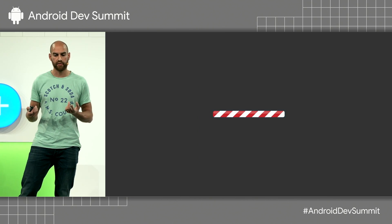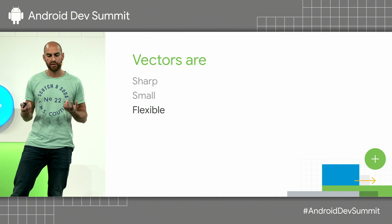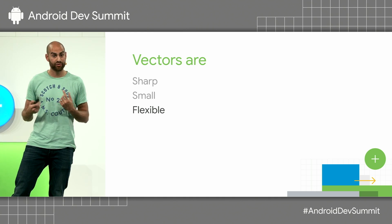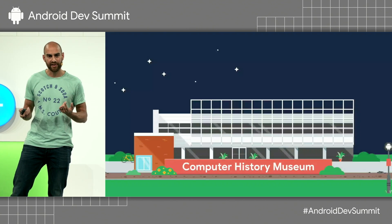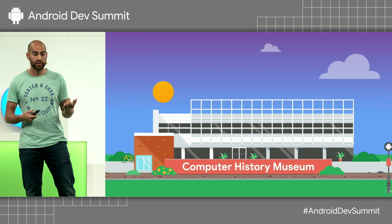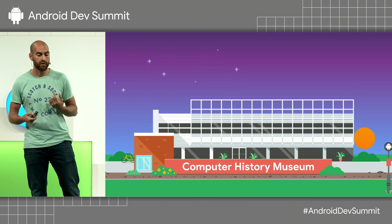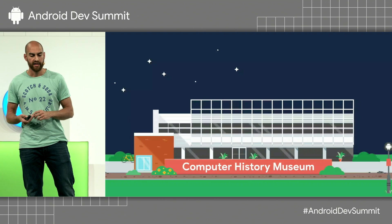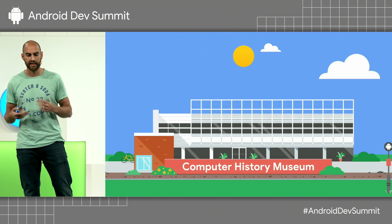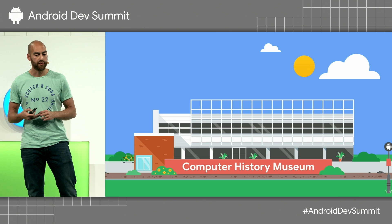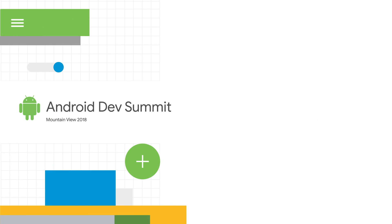And you can have some fun doing something like animating it to produce a loading effect. So hopefully I've shown you that vectors are sharp, small, and extremely flexible, so you can use them everywhere. As a final example, I want to show you what you can build. This is a single animated vector drawable drawn by the amazing Virginia Poltrek, and I had the pleasure of animating it. It's one vector drawable, extremely small, extremely sharp on every display. You can have some fun with them. So that's vector drawables — thanks very much.